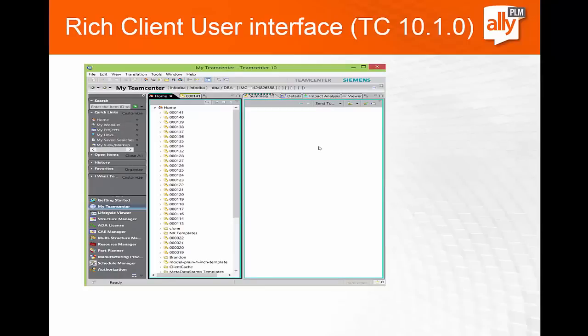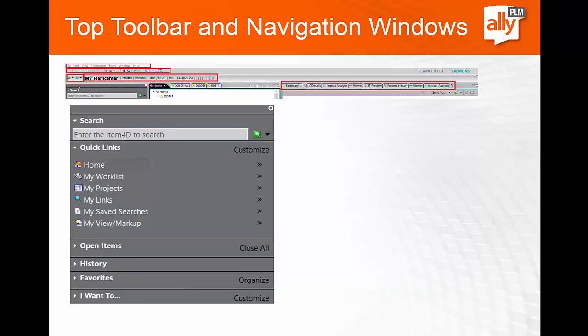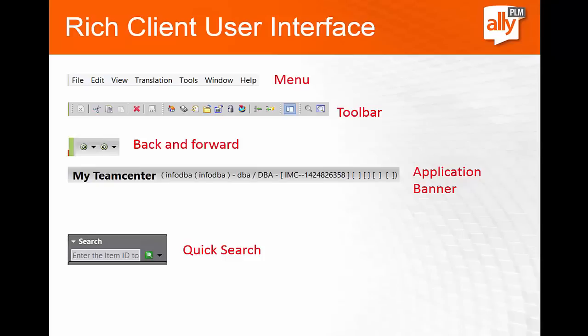This is how a typical Team Center User Interface looks like. I have divided Team Center User Interface into two sections: the top section and the side section. The top section is the toolbar, and the side section I have named it navigation windows or navigation toolbar. Team Center has menus, toolbars, and an application banner. We will cover all this in detail during the demonstration.